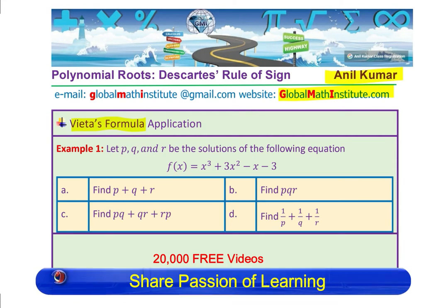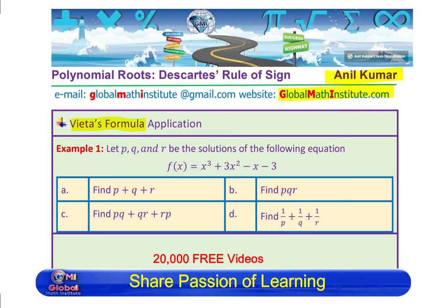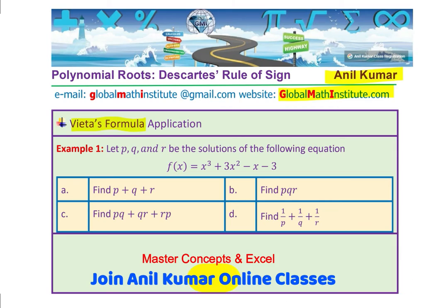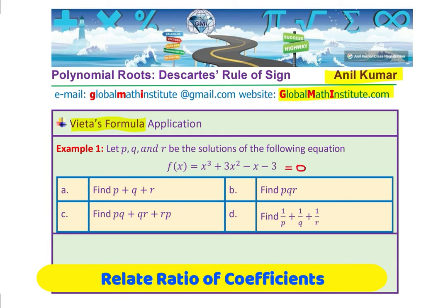Let P, Q and R be solutions of the following equation: f(x) equals x³ + 3x² - x - 3. When we say solution, it means this is equal to 0. It is a cubic equation and it will have three roots — roots could be complex or real. Now, if P, Q and R are the three roots of this equation, you need to find the sum of these roots, the product of these roots, PQ + QR + RP, and also 1/P + 1/Q + 1/R. I would like you to use Vieta's formula in this particular case. You can always find the roots by factoring also — the polynomial taken is very simple in that regard.